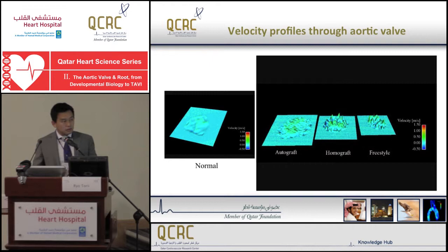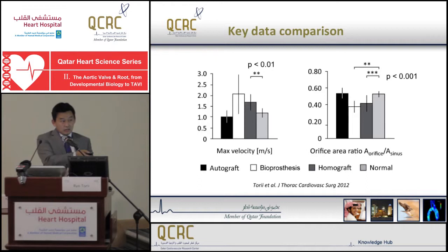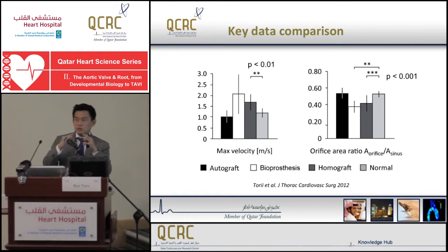As analyzed as a group, the orifice area normalized by aortic sinus area shows the autograft and normal controls have a very wide aortic orifice opening, whereas the homograft and bioprosthesis show lower opening. This corresponds to higher velocities going through the valve, because the flow from the left ventricle has to come through a narrower opening.